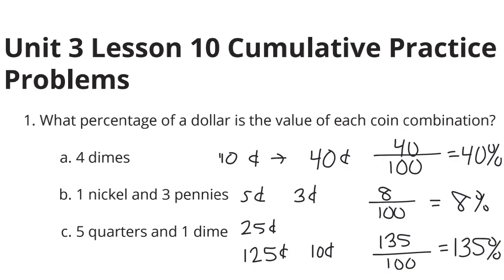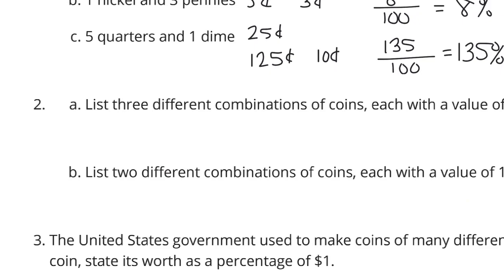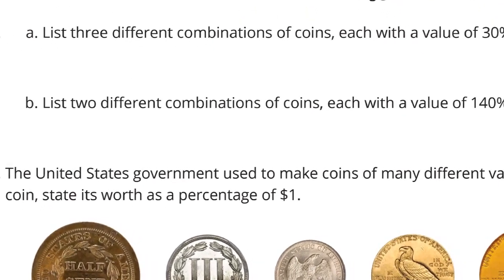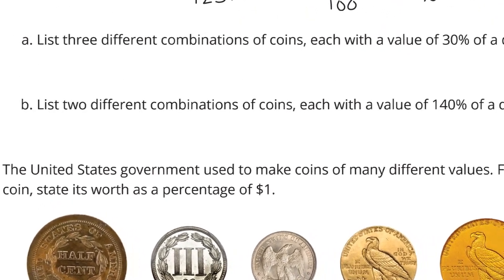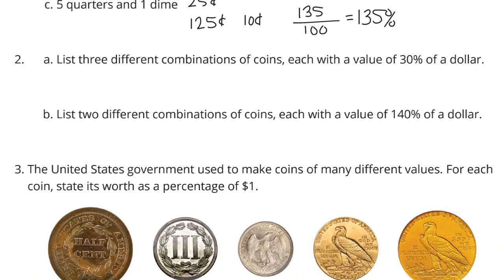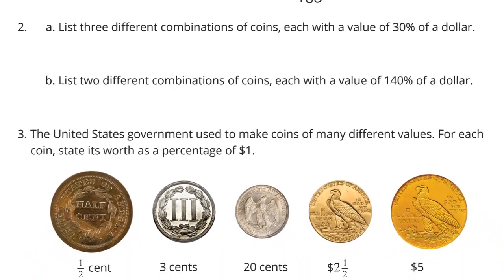Continuing on to question two. List three different combinations of coins, each with a value of 30% of a dollar. Well, 30% of a dollar would be 30 cents. What different combinations can we come up with? Well, the first one is really simple. How about 30 pennies?